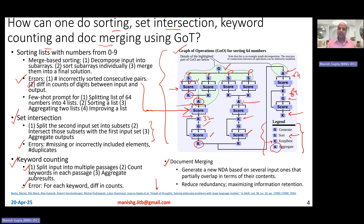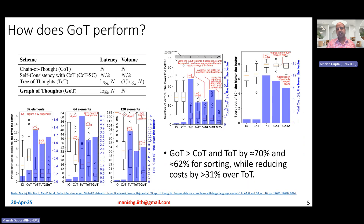The fourth task is document merging. Given a set of non-disclosure agreements that partially overlap in content, the goal is to generate a new merged agreement that reduces redundancy and maximizes information retention. Because this is highly subjective, the reduction in redundancy and maximization of information retention are measured using a large language model.